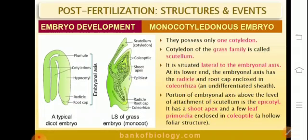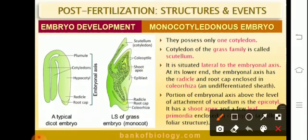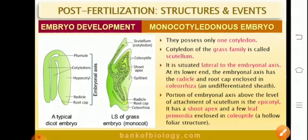In the case of monocots, they have just one cotyledon. The Gramineae family — the grasses and cereals — possess one cotyledon and are therefore referred to as monocots. The cotyledon in the grass family is referred to as the scutellum, situated laterally to the embryonal axis. There is an undifferentiated sheath enclosing the root cap, referred to as the coleorhiza. The shoot apex and a few leaf primordia — the young leaves — are enclosed in the coleoptile, which is a hollow foliar structure. Thus, embryo development takes place in the monocotyledon.